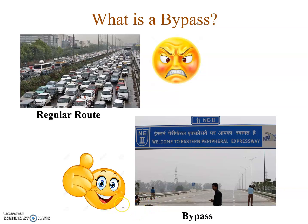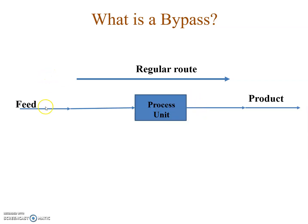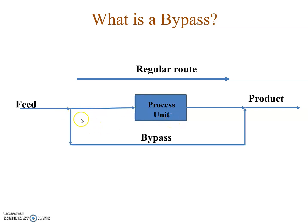So I will be very unhappy taking the regular route through the city. Now instead, what I can do is take a bypass route — a newly constructed bypass to Delhi. If I follow this I will be able to circumvent Delhi without actually crossing through the city. So I am bypassing the actual city. This is what bypass means in day-to-day life. In a processing unit, the regular route is: feed goes to a process unit, gets processed, and the product comes out.